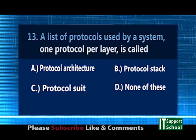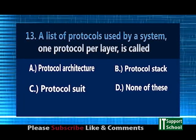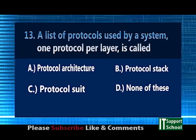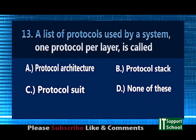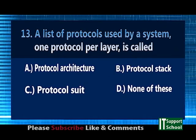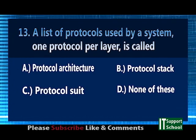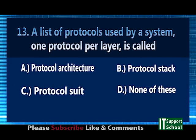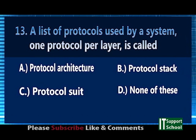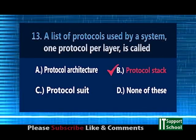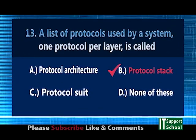Question number 30. A list of protocols used by a system, one protocol per layer, is called: A. Protocol Architecture, B. Protocol Stack, C. Protocol Suite, D. None of these. Answer: B, Protocol Stack.